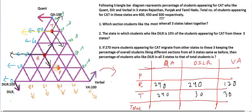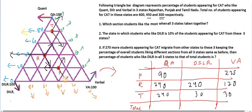Let's move on to Punjab. For quant, it is 20%, and 20% of 450 is 90. For verbal, this is 80, 60, 40 — between 40 and 60 it is 50%. So 50% of 450 is 225. For DILR, it will be between 20 and 40, that is 30%. 30% of 450: 45 times 3 is 135.